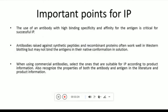Important points to consider: the use of an antibody with high binding specificity and affinity for the antigen is crucial for successful immunoprecipitation. Antibodies raised against synthetic peptides and recombinant proteins often work well in western blotting but may not bind the antigen in its native confirmation in solution. When using commercial antibodies, select one that specifically binds your antigen, and confirm this using the product information.